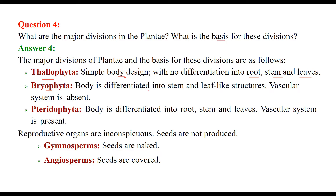In Bryophyta, the body is differentiated into stem and leaf, but the vascular system is absent. In Pteridophyta, the body is differentiated into root, stem, and leaves, and the vascular system is present. However, the reproductive organs are inconspicuous — that is, seeds are not produced.